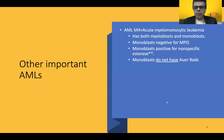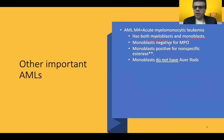AML M4 is acute myelomonocytic leukemia. It has components of both myeloblasts and monoblasts, with myelocytic and monocytic elements usually seen in equal proportion. Monoblasts are negative for myeloperoxidase (MPO) and are usually positive for NSE — nonspecific esterase — on cytochemical staining.